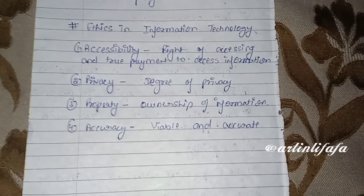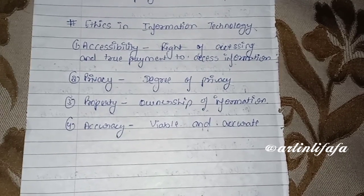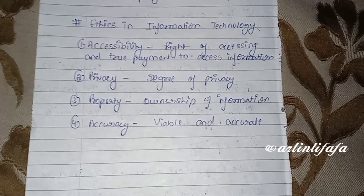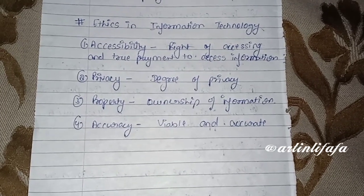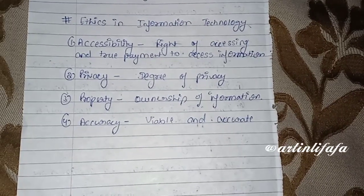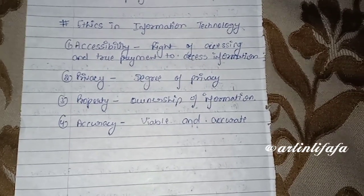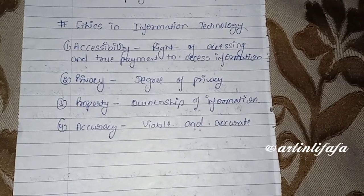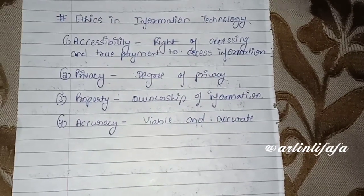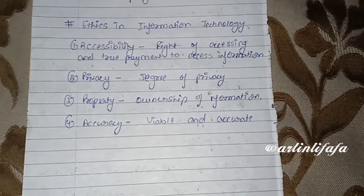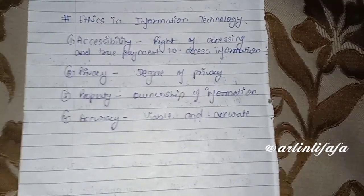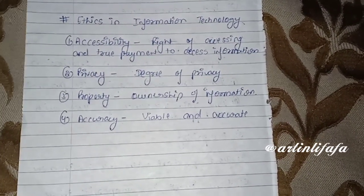Second is privacy — a particular piece of information must remain private. Information stored in a particular place acts as our property, and we give ownership only to someone we trust. Our ethic is that we don't transfer ownership carelessly. Last one is accuracy — our stored data must be accurate and viable; we must not store misrepresented data.